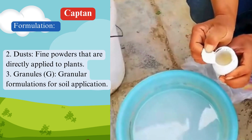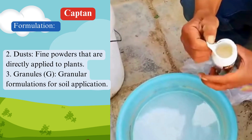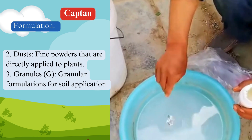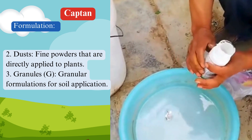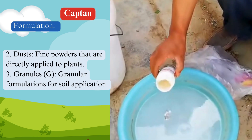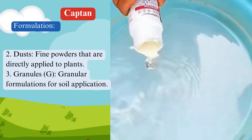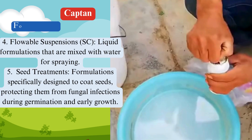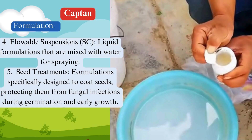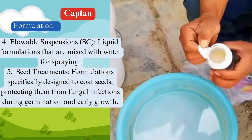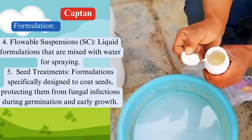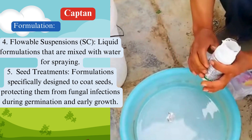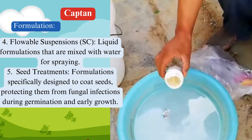2. Dusts: fine powders that are directly applied to plants. 3. Granules (G): granular formulations for soil application. 4. Flowable suspensions (SC): liquid formulations that are mixed with water for spraying.